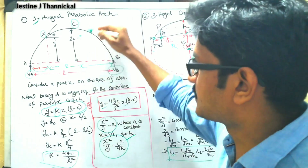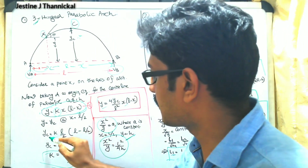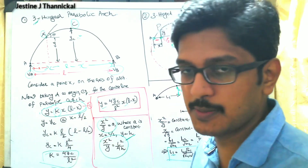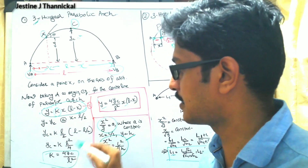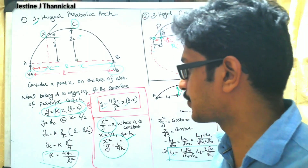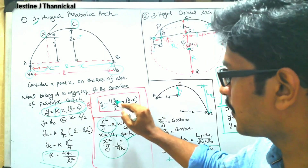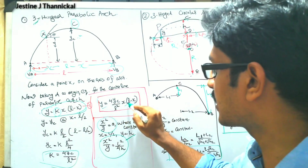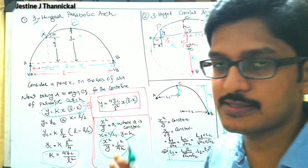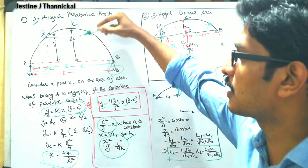Substituting x = l/2, we get yc = k × (l/2)(l − l/2), which gives k = 4yc / l². Substituting back into the first equation, we finally get y = (4yc / l²) × x(l − x). This equation is very important, as it relates any point on the arch to the crown distance yc.